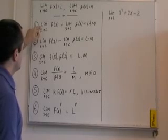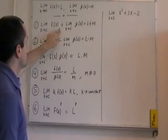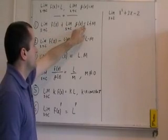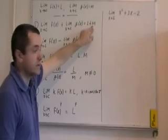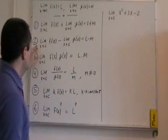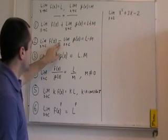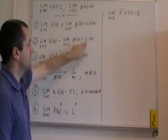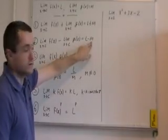Property one is the limit as x goes to c of one function plus the limit as x goes to c of another function is equal to the limit of the first function plus the limit of the second function. Property two is the limit as x goes to c of one function minus the limit as x goes to c of another function is simply the limit of the first function minus the limit of the second function.